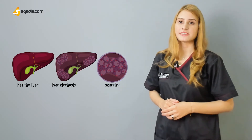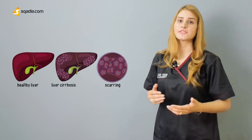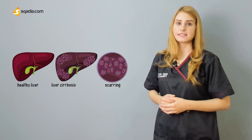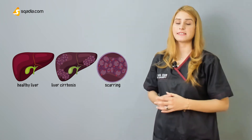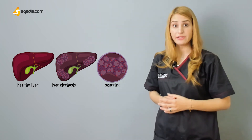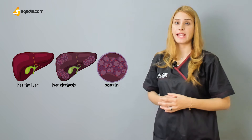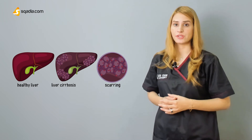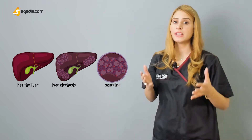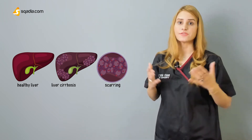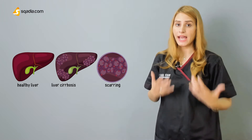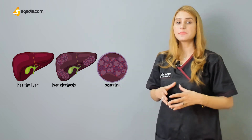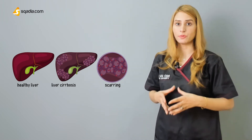Hepatic cirrhosis is defined histologically as a diffuse hepatic process characterized by fibrosis and conversion of normal liver architecture into structurally abnormal nodules. It may take weeks to years to occur, and early on there are often no symptoms.